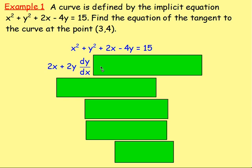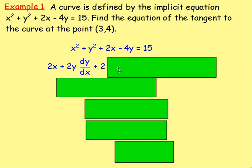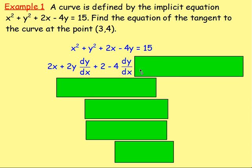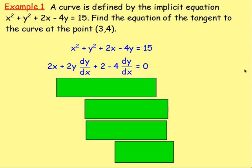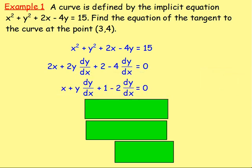Excellent. If you differentiate 2X, that would go to 2. And if you differentiate negative 4Y, that would go to negative 4 — but again, because you're differentiating Y with respect to X, you need DY by DX. And if you differentiate 15, that would go to 0. From there, every single term here is divisible by 2, so let's divide by 2 to give ourselves easier numbers.